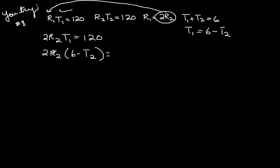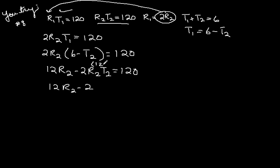And look, we're going to have an R2T2, so all is going to be well. No problem. 120. So, we get 12R2 minus 2R2T2 equals 120. And look, we have R2T2 equals 120, so we're going to replace this with 120 times 120 equals 120.